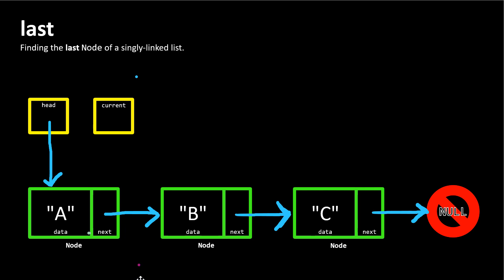In this video, we're going to take a look at how to find the last node of a linked list imperatively. A linked list is made up of node objects. Each node object has a data property, which is the contents of the node, and a next property, which is a reference to the next node in the list.